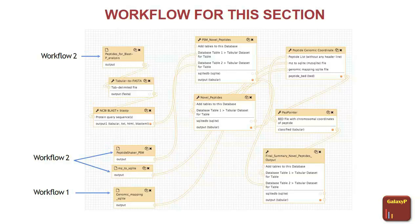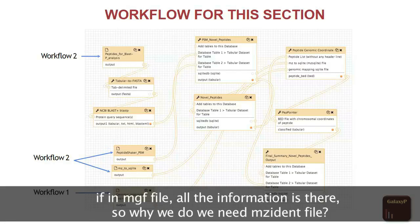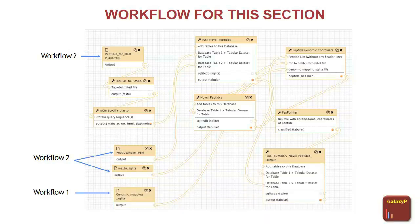The MZ identML file is the file generated by a protein or PSM search. All the MZ identML file information gets into the SQLite database. This is really important because it also has information about continuous B ions, continuous Y ions, and all the spectral annotation information that you can use to process your data. The MZ file by itself is just your peak list — it does not have any peptide annotations — while the MZ identML file has much more information.